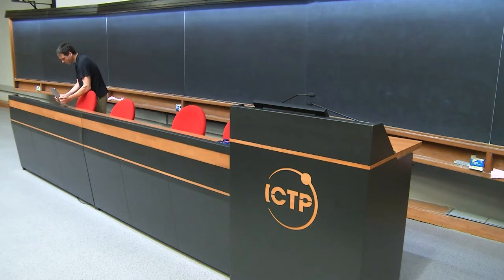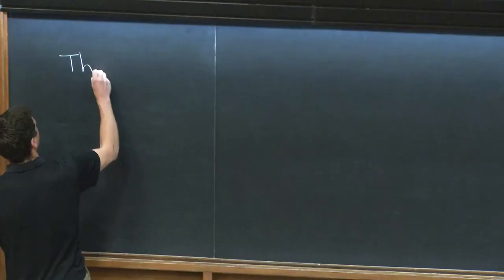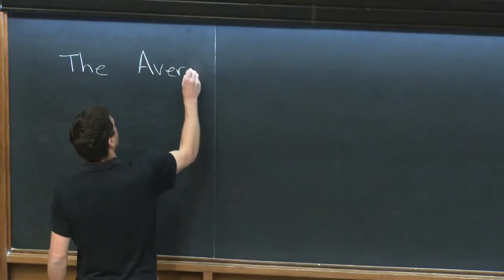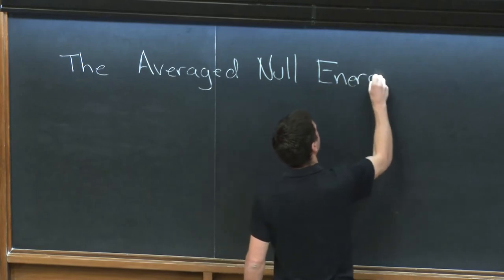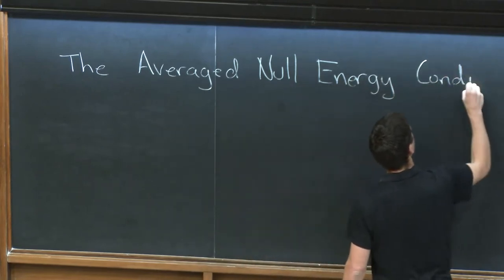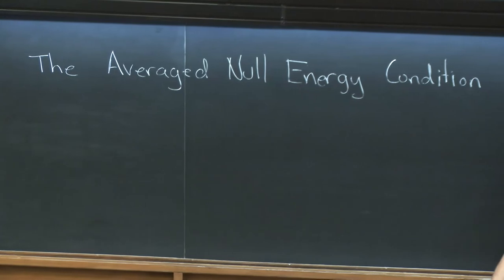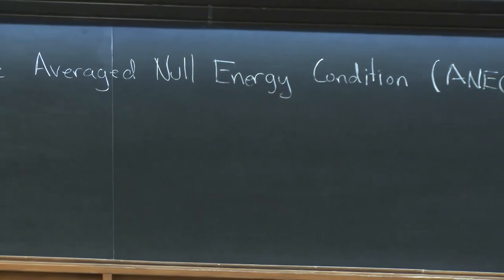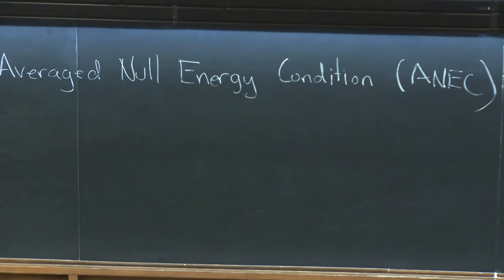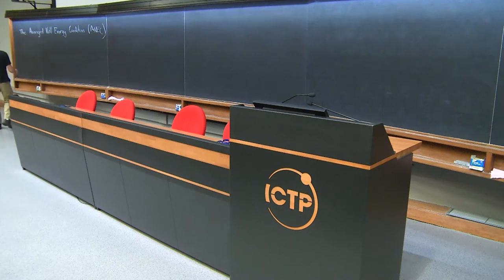So the topic of these lectures is the averaged null energy condition, or ANEC. I'll try to write big — stop me and I'll start writing big again as soon as I remember. So when you learn general relativity, you usually come across some energy conditions.